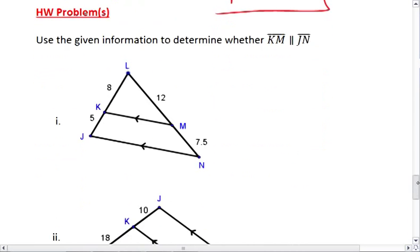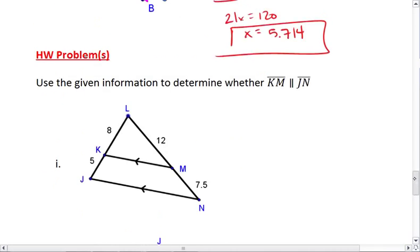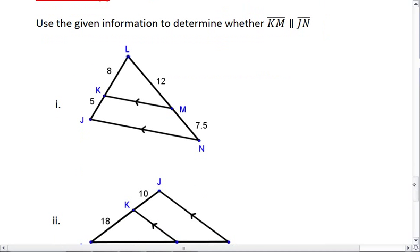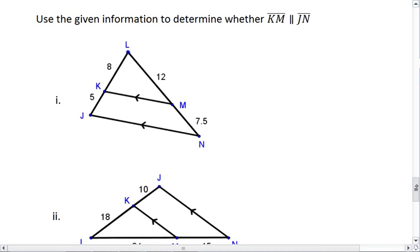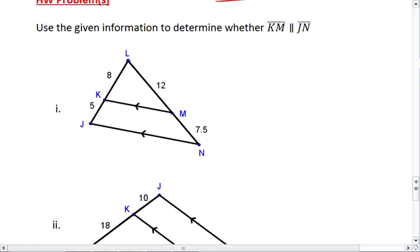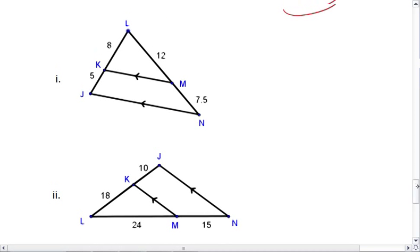For homework, you do have a couple of problems here. For the first two problems, I want you to use the given information to determine whether KM is parallel to JN. So you need to check the sides and make sure they're in the proper ratio. Do that for both of these problems.